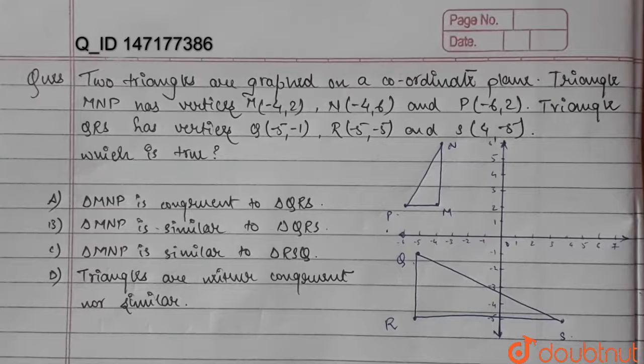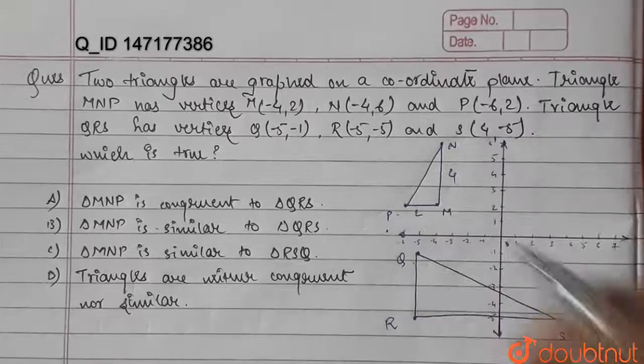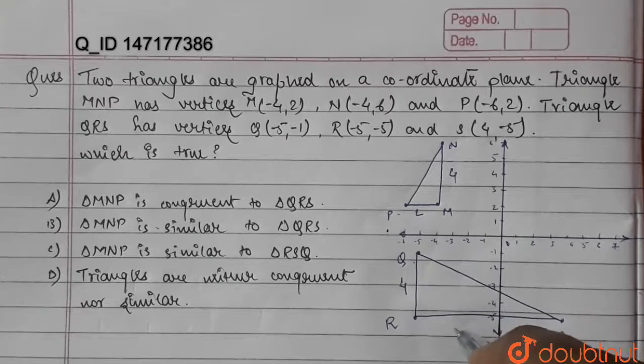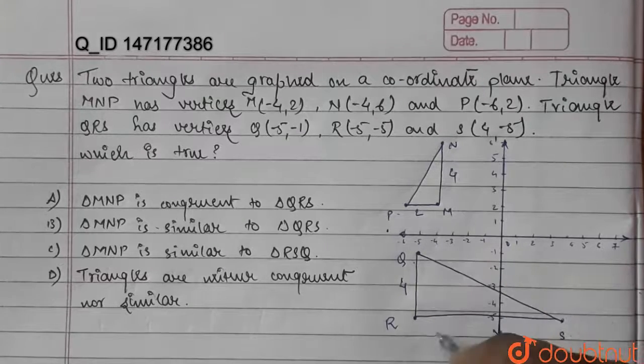Let's determine their sides by simply looking at the axis. We get MN is 4, and this is 2, and this is 4, and QR is 5 plus 4, which is 9.